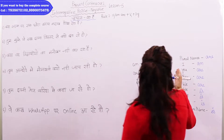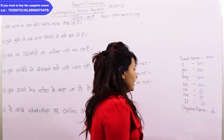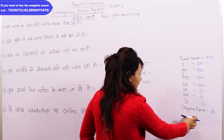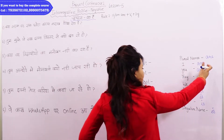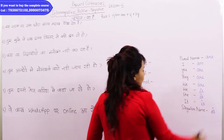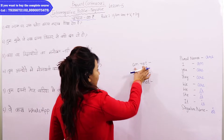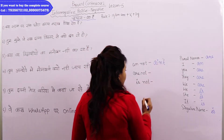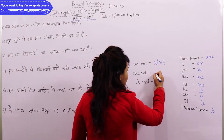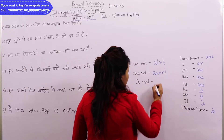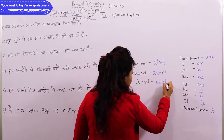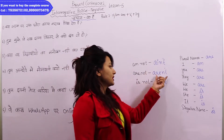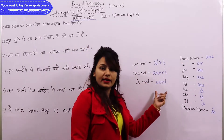Here, with subjects — I, you, they, we, he, she, it, singular names, plural names — we use the respective helping verbs. 'Am not' in short form is written as 'aren't', 'are not' as 'aren't', and 'is not' as 'isn't'. We will use short forms in all our sentences as they are easier to use.